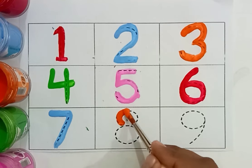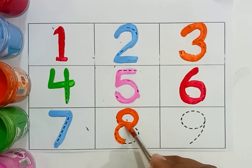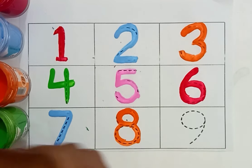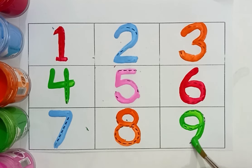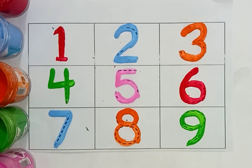Orange color. Eight. Which number is this? Eight. Green color. Nine. Which number is this? Nine. And repeat again.